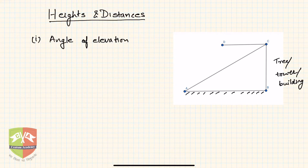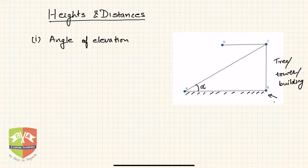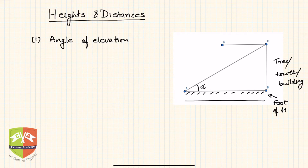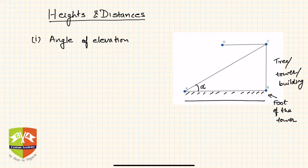The top point of the tree or tower is point C. The angle alpha is between the line joining the foot of the tower on the ground and the line of sight to the highest point C. This angle alpha is known as the angle of elevation. Your eye is at point A, initially looking along AB.